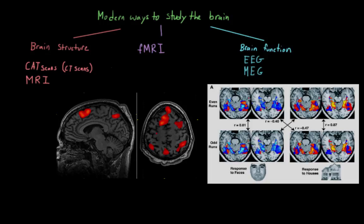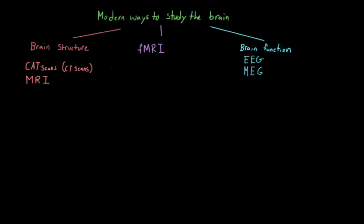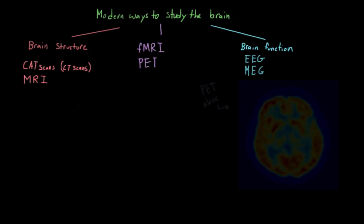The next type of methodology that is both structural and functional is positron emission tomography, or PET scans. While on their own, they can't really give us a super detailed structural image of the brain, we can actually combine them with the structural technology that we talked about earlier, like CAT scans and MRIs.